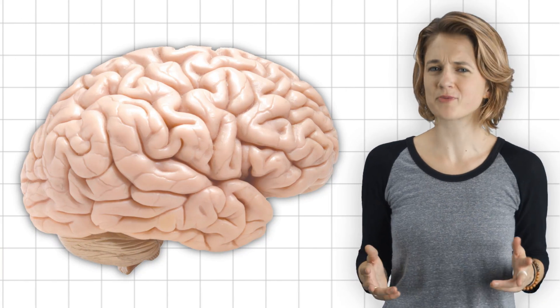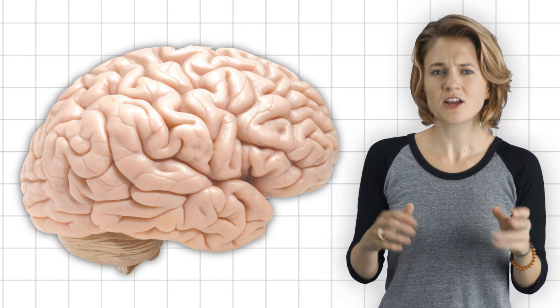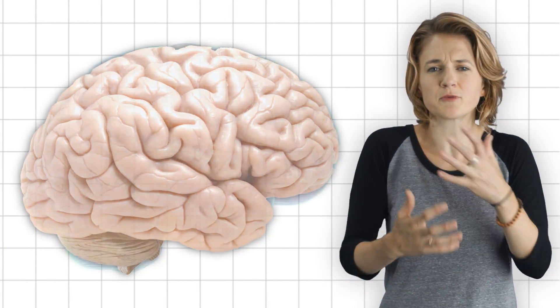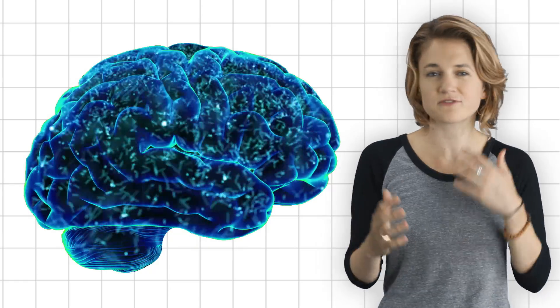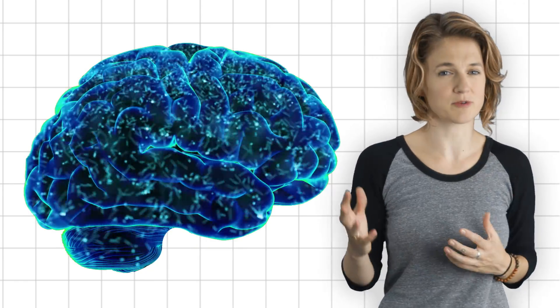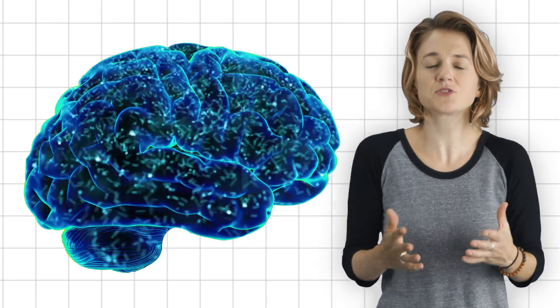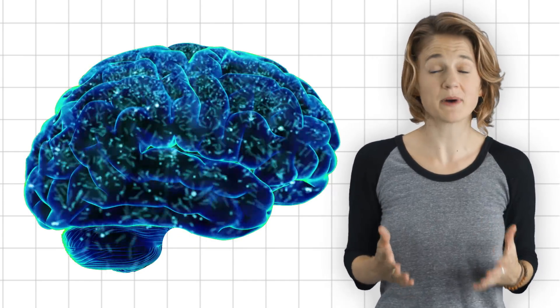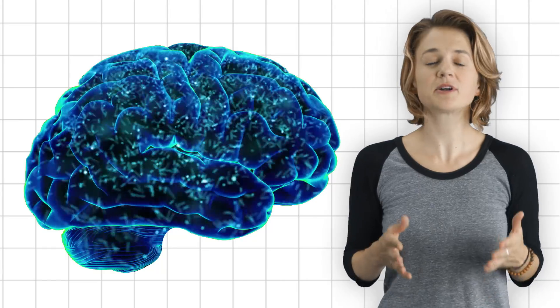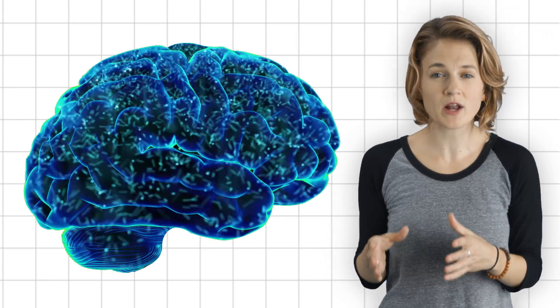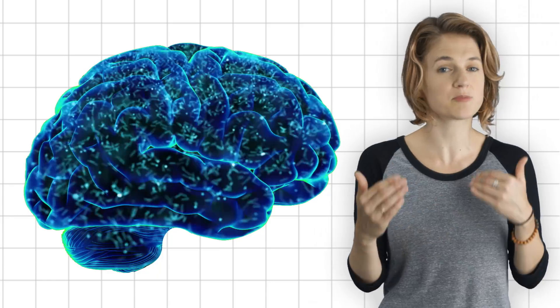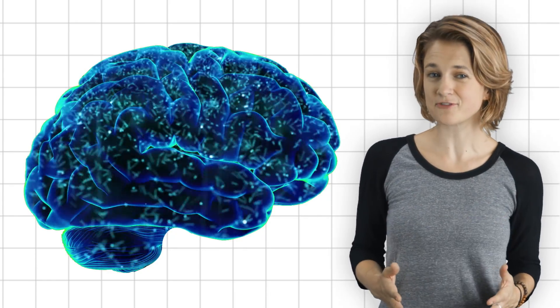If you were to watch a brain think, you would see a beautiful mess of activity, with neurons firing all over the place. This wild world must have some order, but coming up with a precise and quantitative description of that order — of how the brain is processing information — is extremely difficult.